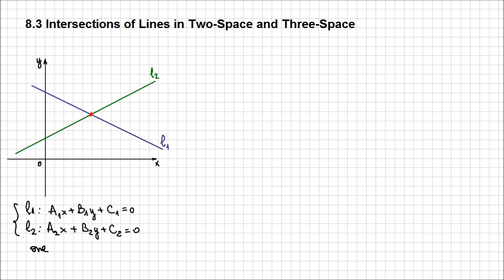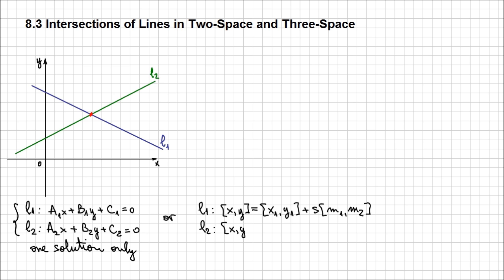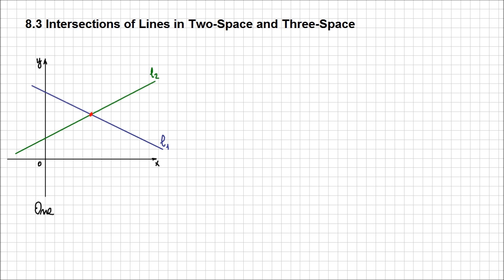For example, if you have the equations in the scalar form and you solve this system of equations, you're going to find only one solution. And if you have the equations of the line given in the vectorial form, you're still going to find only one solution, but this time you're going to find the two parameters S and T for which you again find only one solution satisfying both expressions. So regardless of the format, if the lines intersect in one point, you can find only one solution.